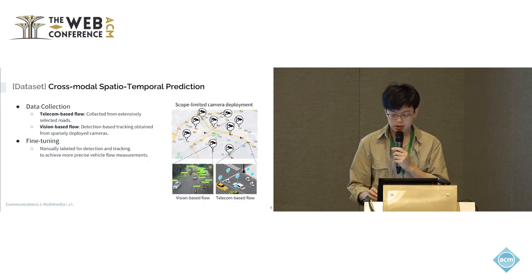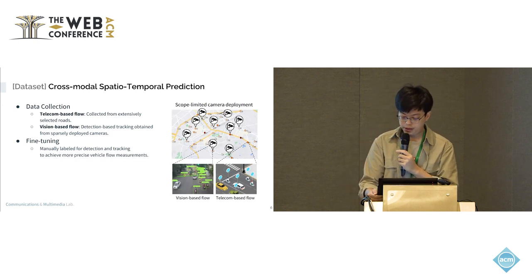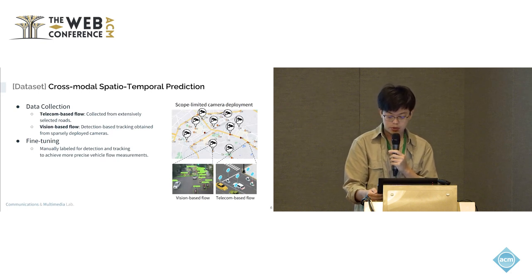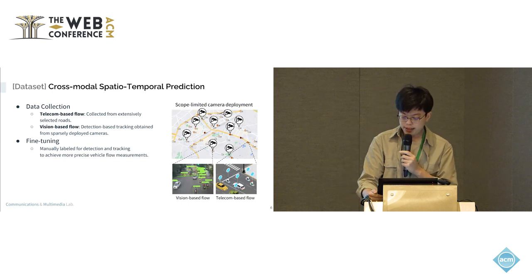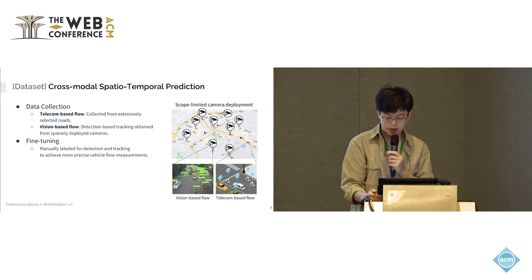In this research we provide a dataset including telecom-based flow collected from about 15 road sections, and vision-based flow collected from only 10 cameras — which is very sparse — to support our goal of cross-modal prediction. To ensure the accuracy of the vision-based flow, we mainly label the training data for detection and tracking algorithms, and then fine-tune them for the Taiwan environment, such as very dense motorbike objects.